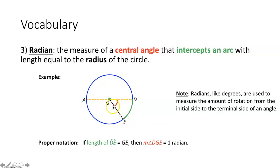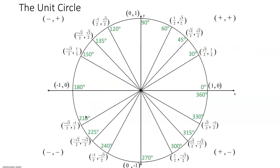The cool thing about radians is that like degrees, we can use them to measure the amount of rotation from the initial side of an angle to the terminal side of an angle. Today we're going to figure out how to measure specific angles within the unit circle in terms of radians. We're also going to figure out how to convert between degrees and radians. This is the unit circle that we filled out in previous lessons, with all of the degree measures and corresponding points around the unit circle.